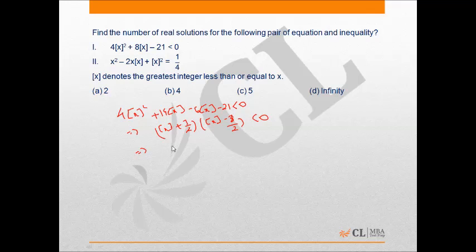From here I can get a range for the greatest integer function of x which is minus 7/2 less than box x less than 3/2. From here the possible values of box x become -3, -2, -1, 0, or 1.